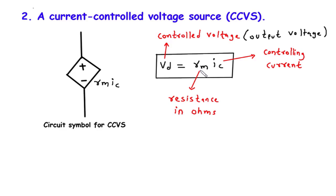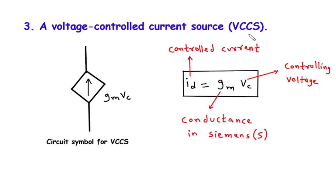The concept of a CCVS finds applications in various electronic systems. It allows us to design circuits where the voltage across a particular component is controlled by the current flowing through another part of the circuit. This feature is especially useful in amplifiers, filters, and other signal processing circuits. To summarize, a CCVS produces a voltage across its terminals proportional to the controlling current in another part of the circuit, using the equation VD equals RM asterisk IC. The resistance RM plays a crucial role in determining the voltage output, with higher values resulting in larger voltages and vice versa.